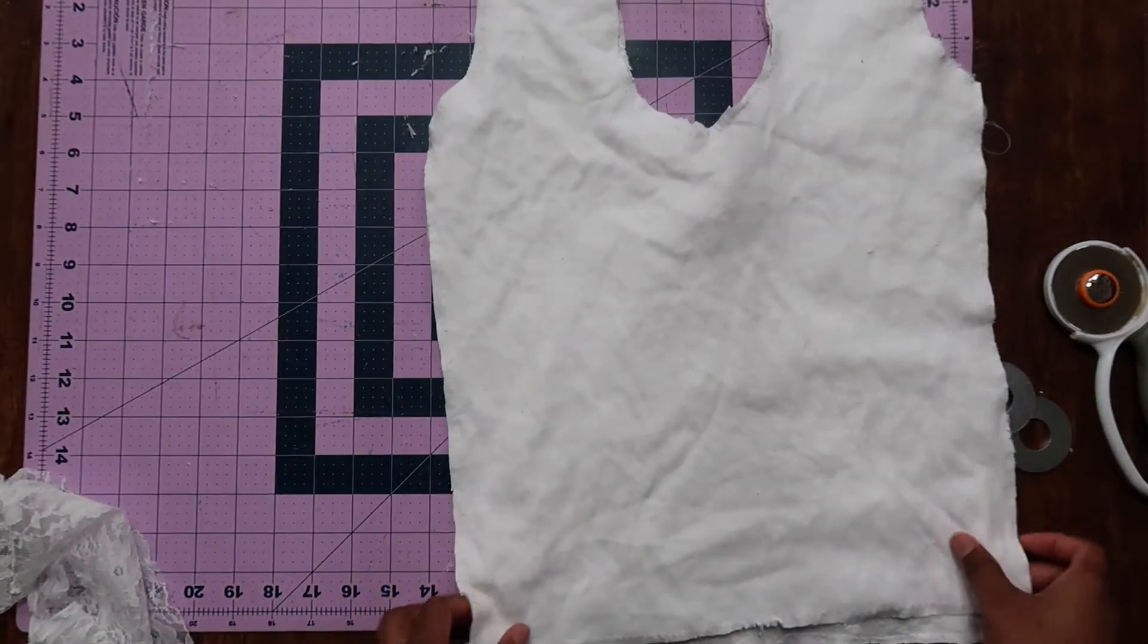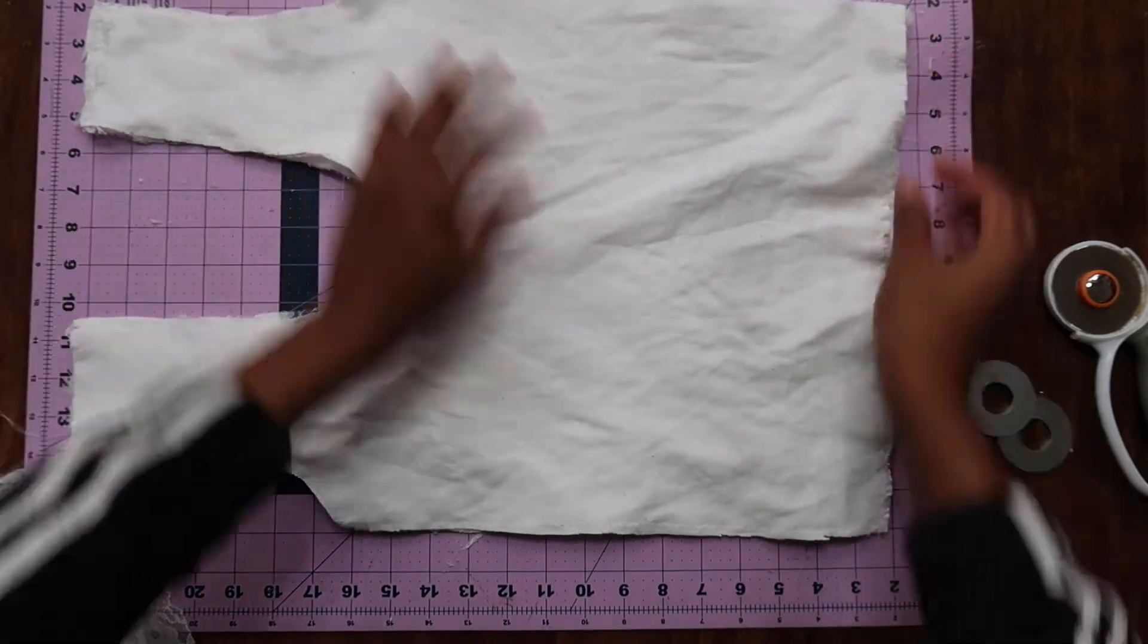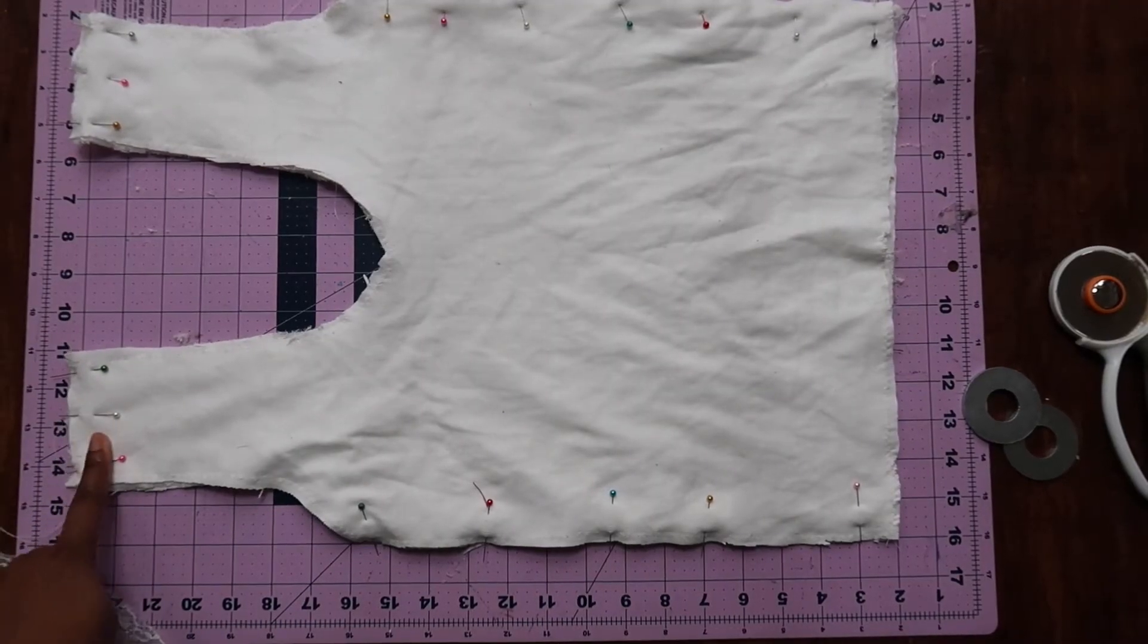Once the lace and the knit are attached and married, we're going to put the right sides together and attach them at the side seams and the shoulder seams.